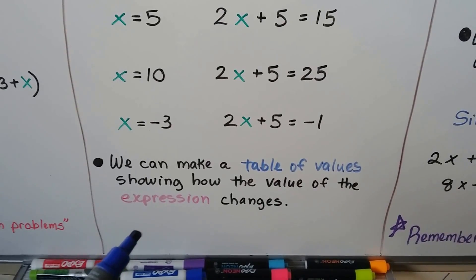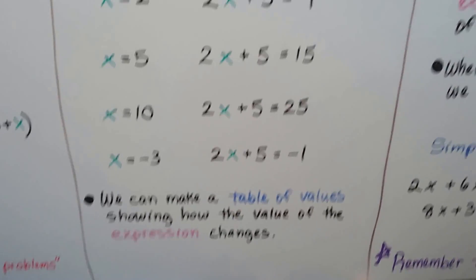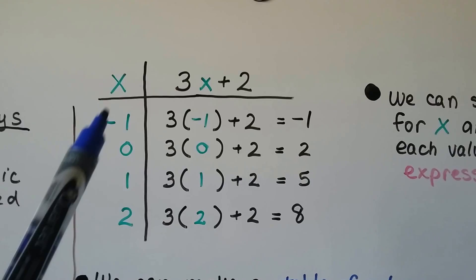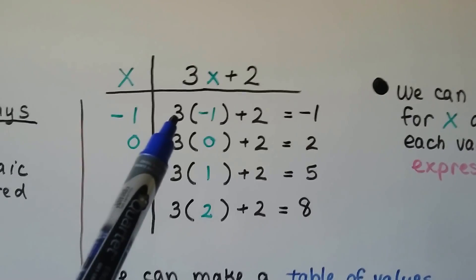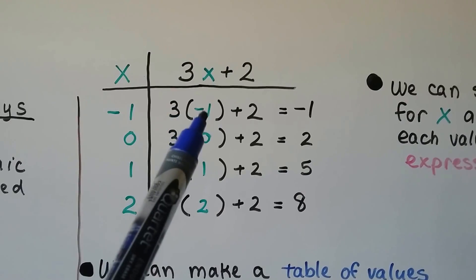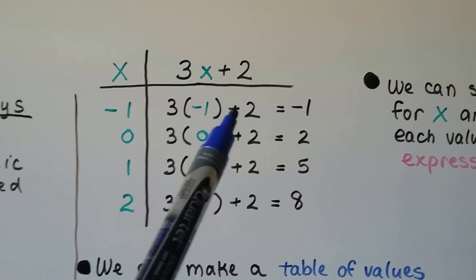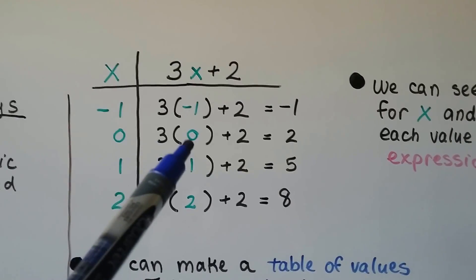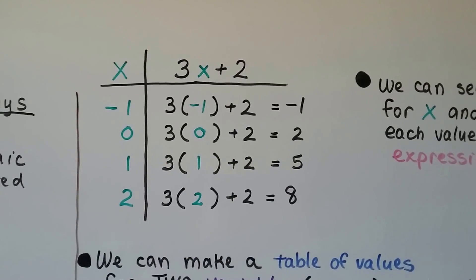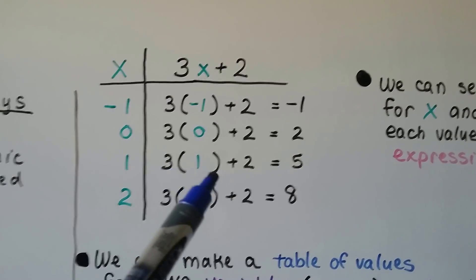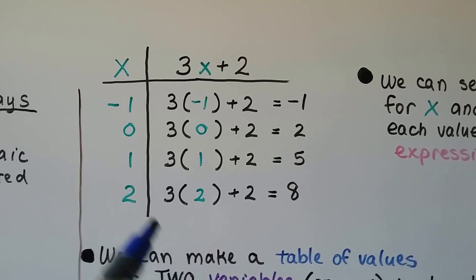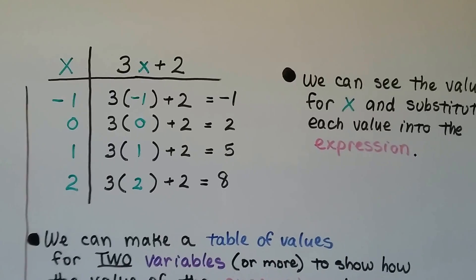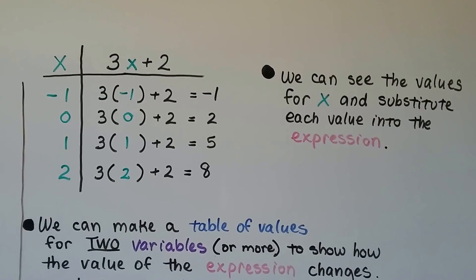We can make a table of values showing how the value of the expression changes. Here we have the expression 3x plus 2. If x is negative 1, we have 3 times negative 1, which is negative 3, plus 2 equals negative 1. If x is 0, then 3 times 0 is 0 plus 2, that's 2. If x is 1, it equals 5. If x is 2, we have 6 plus 2, which equals 8. We substitute each value into the expression to see how it changes.